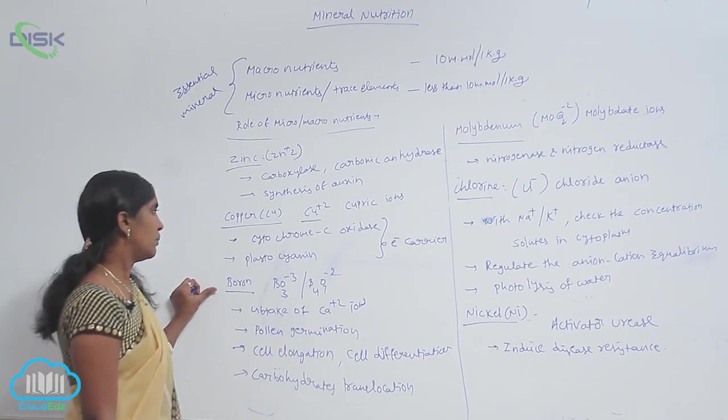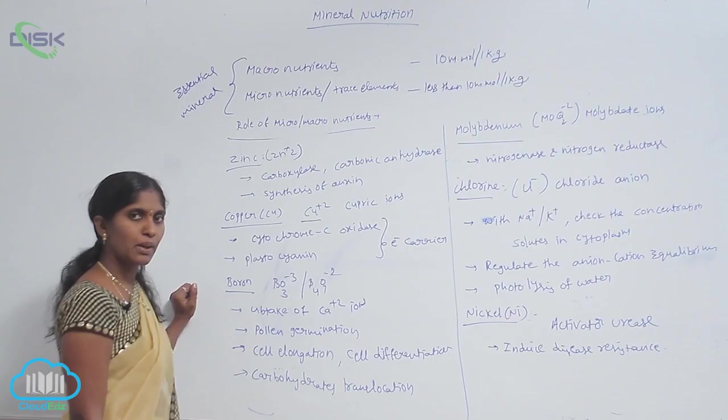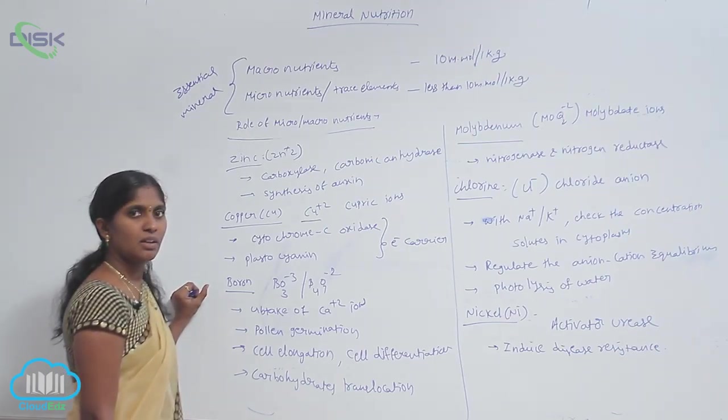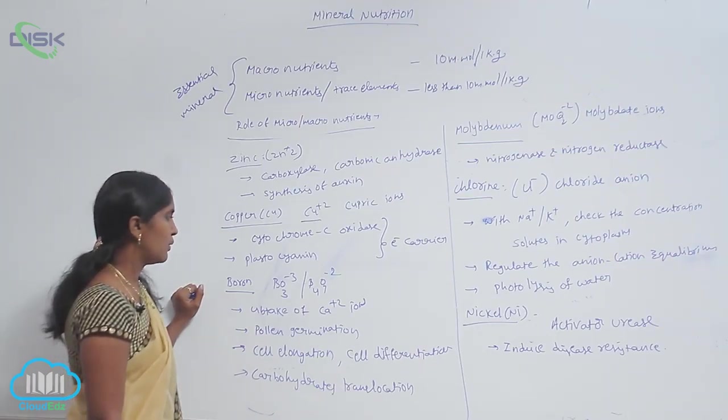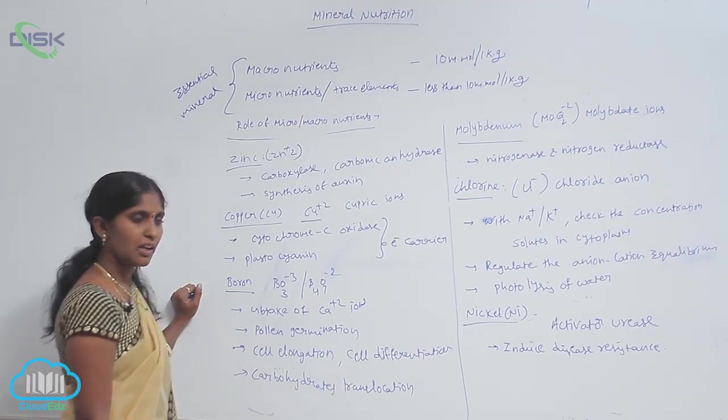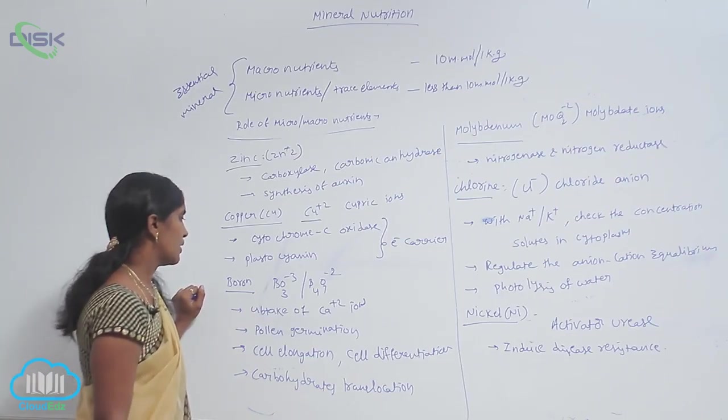And boron. Boron is also a micronutrient. The absorbed form of boron is borate BO3-3 as well as B4O7-2.